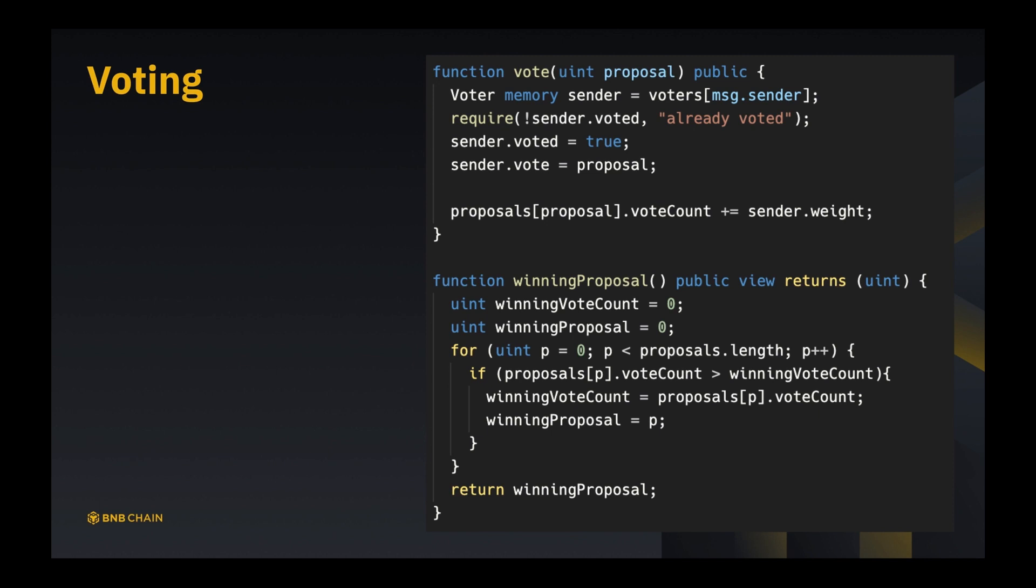Finally, we can query winning proposal at any time. We just maintain winningProposal voteCount and winningProposal. Then we iterate all possible proposals. If the vote count is larger than current best vote count, then we say okay, this proposal is winning over the previous best. And we just pick the one with the largest vote count by now, so we'll be able to give you the real-time winning proposal every time you invoke a query to winning proposal function.